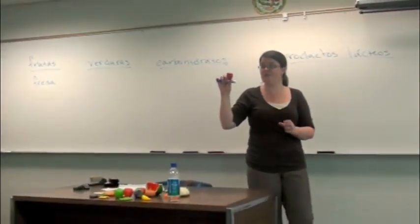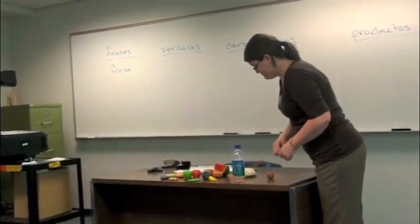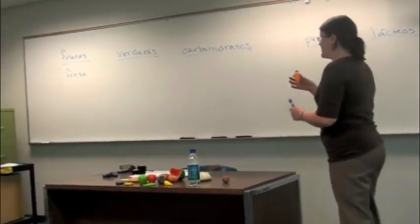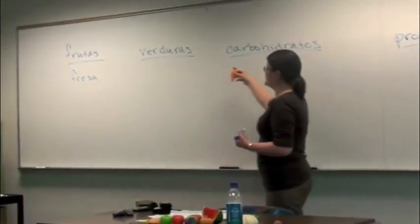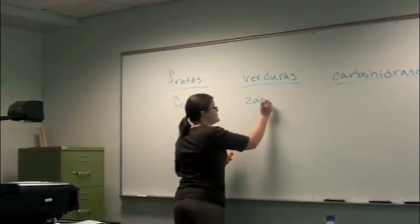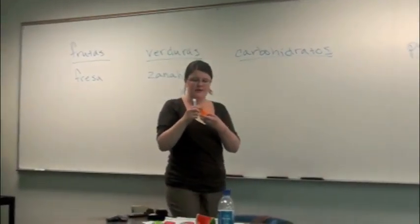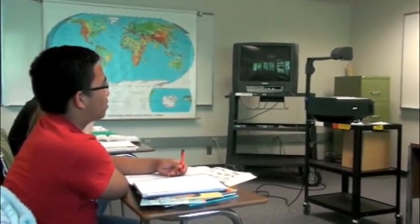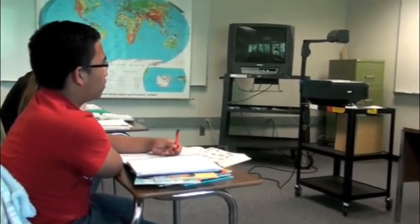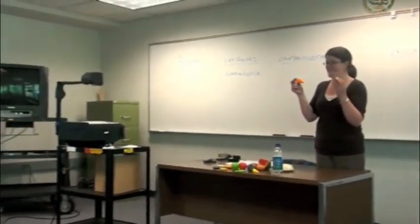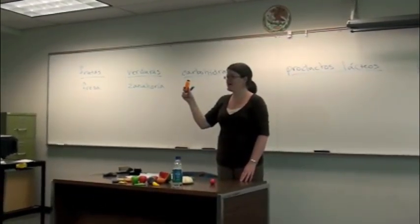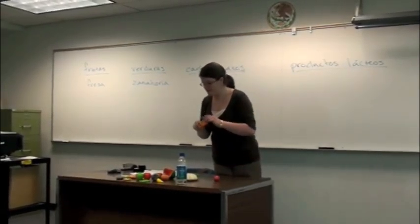La fresa es roja. La zanahoria, ¿también es una fruta? No. ¿La zanahoria es un carbohidrato? No, es una verdura. La zanahoria es una verdura. ¿Y de qué color es la zanahoria? ¿También es una verdura? ¿Es roja como la fresa? No es roja. ¿Es azul? No. Tenemos una lista de los colores en el libro. La zanahoria es anaranjada. La zanahoria es anaranjada y es una verdura.